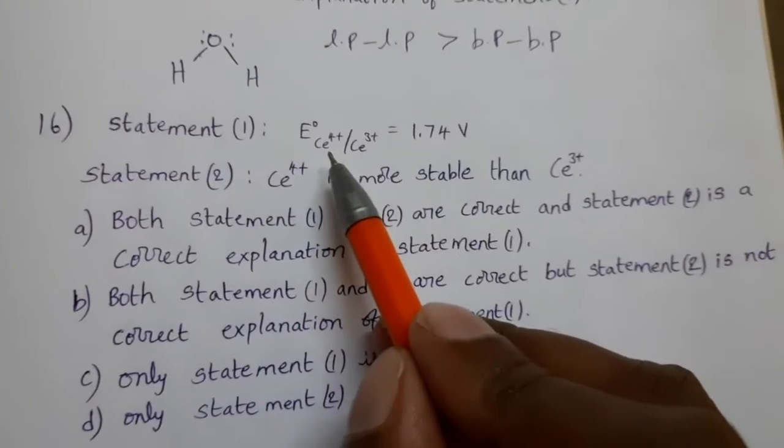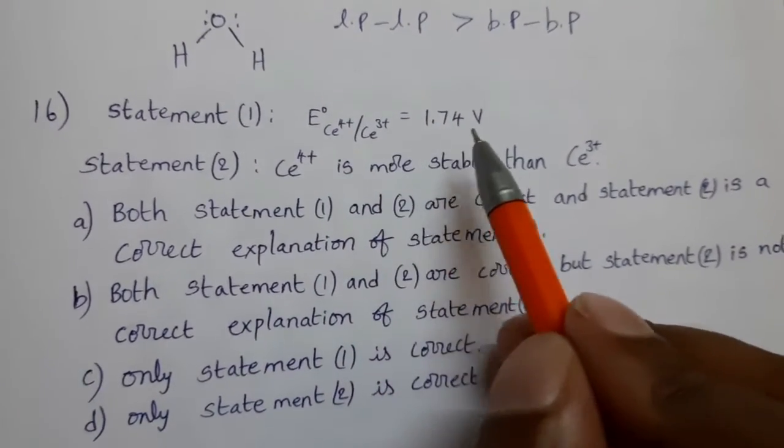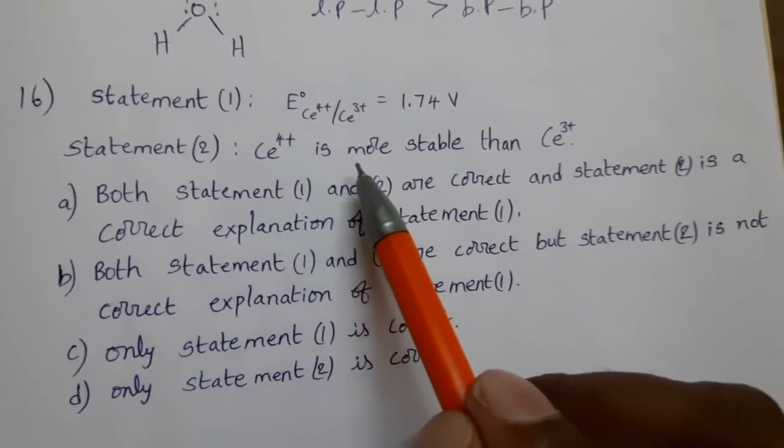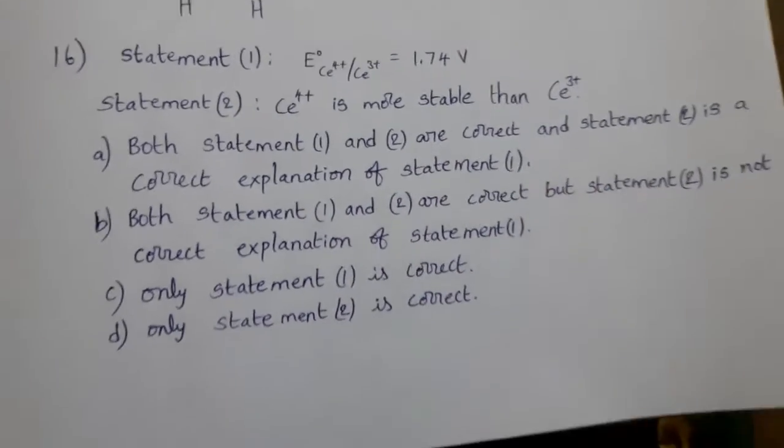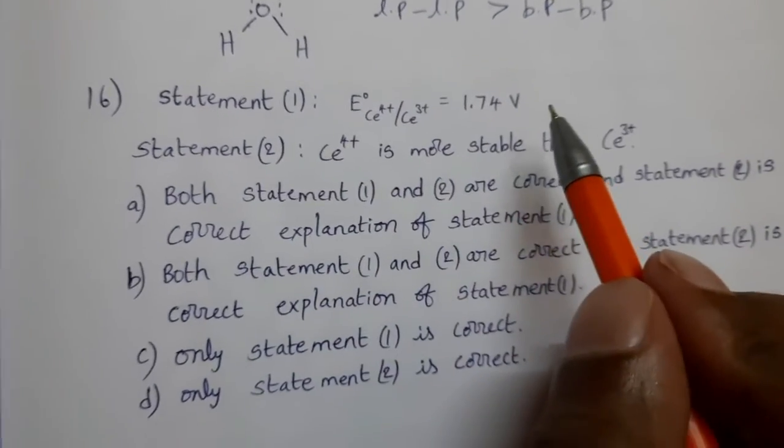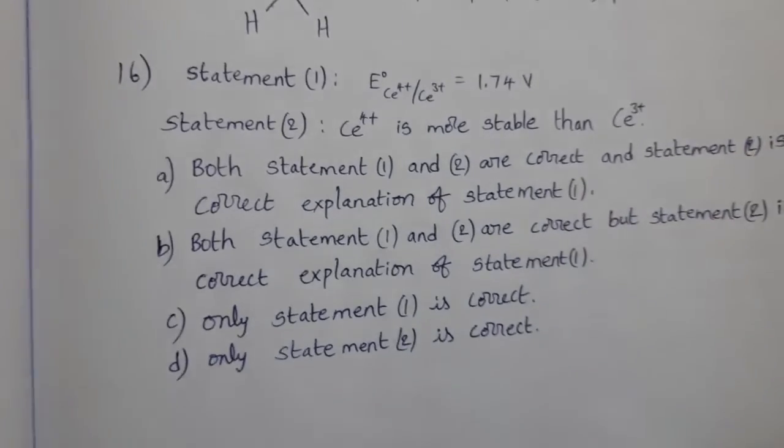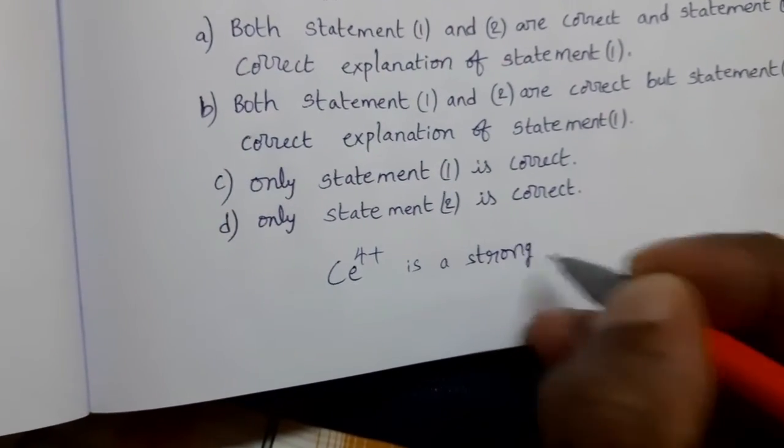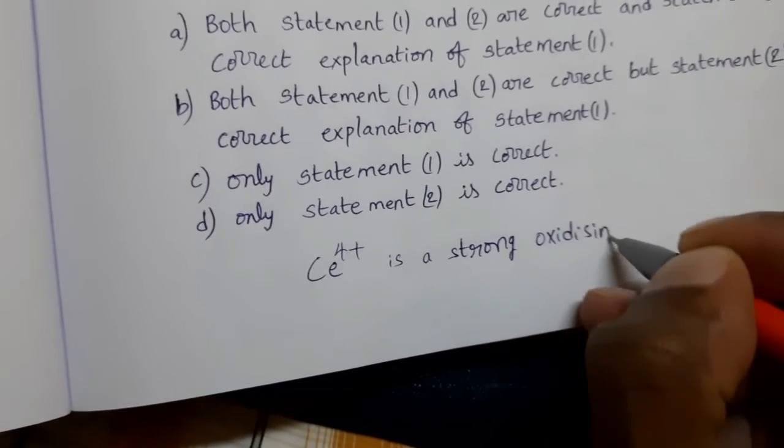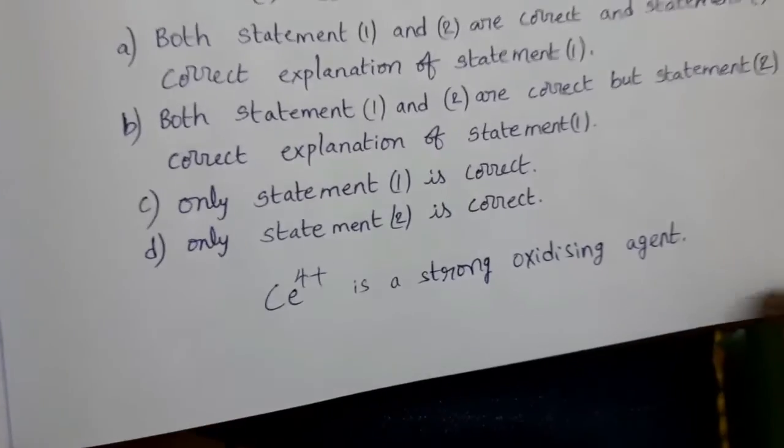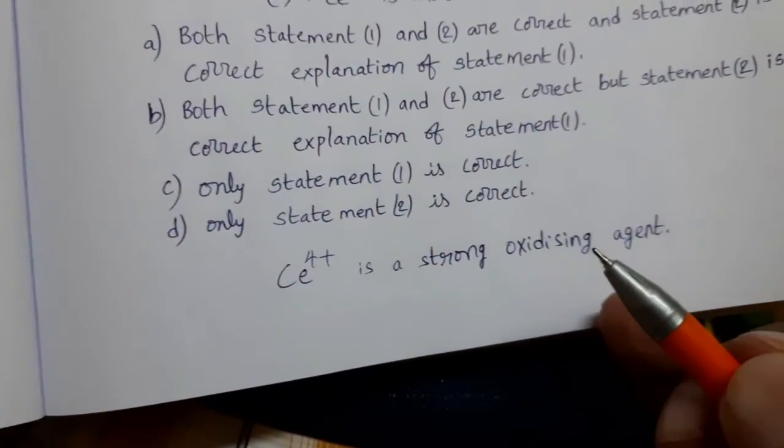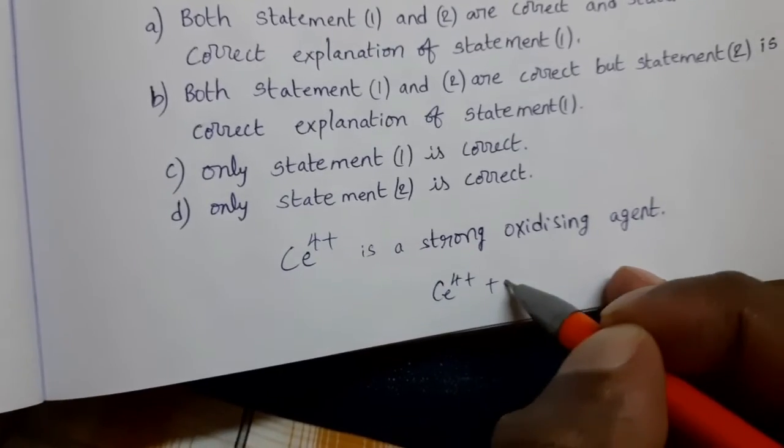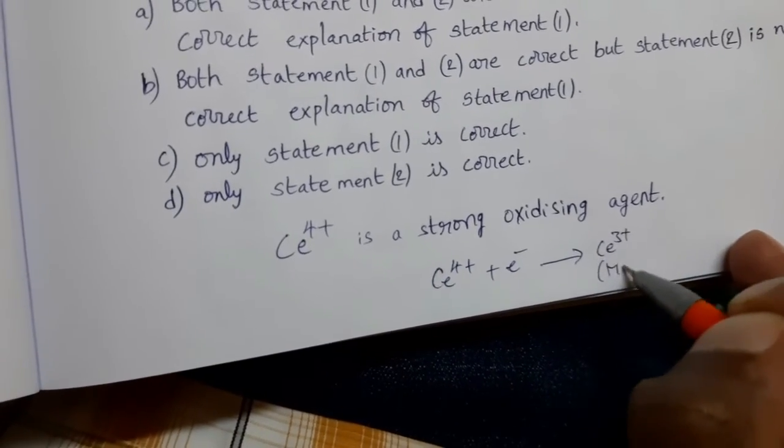Next. Statement: Electrode potential of Ce4+/Ce3+ is 1.74 V. That is correct. Statement 2: Ce4+ is more stable than Ce3+. This is wrong because here electrode potential value is positive. Positive means it indicates oxidizing agent. What is the meaning of oxidizing agent? It can reduce to lower oxidation state by accepting electrons. That means Ce4+ is changed to more stable Ce3+. It is more stable.